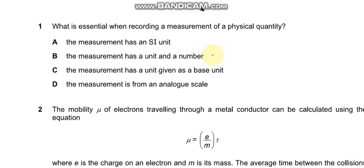Question number 1 asks: what is essential when recording a measurement of a physical quantity? For a physical quantity what you need is a unit and a number, so B is the appropriate answer.